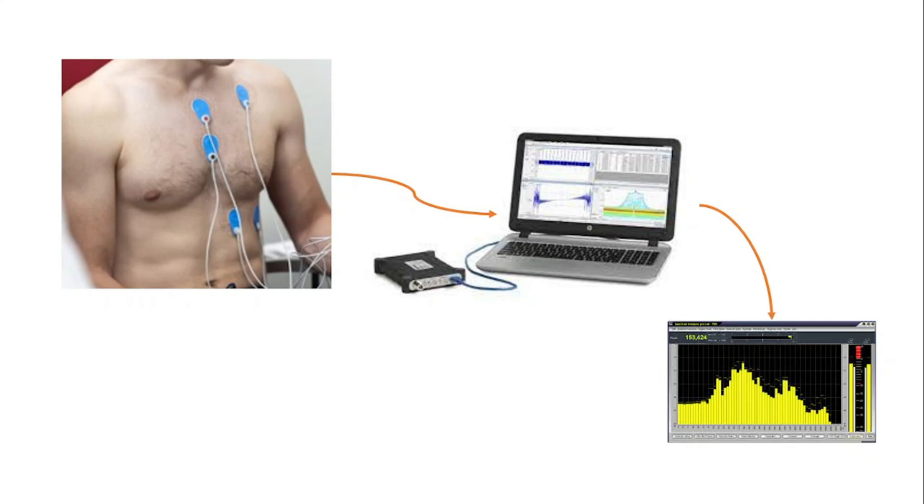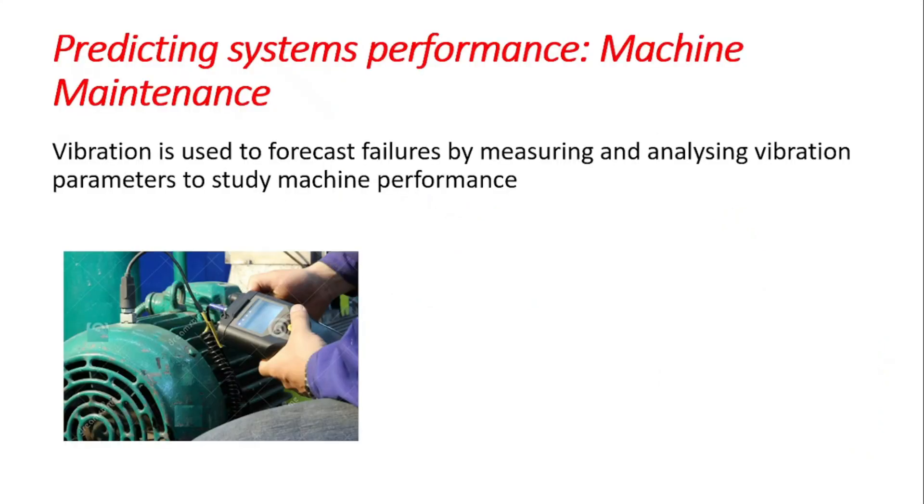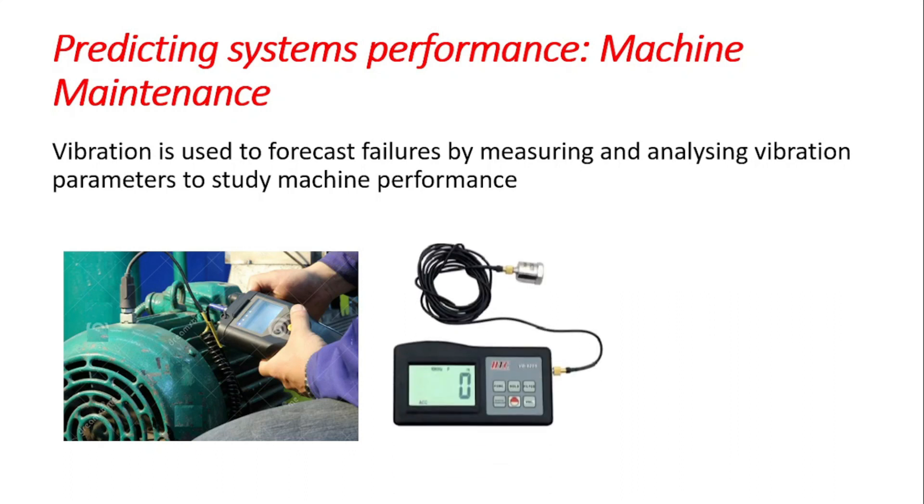So vibration can be used to predict machine performance. As a matter of fact, it's known that vibration is used to forecast failure by measuring and analyzing vibration parameters to study machine performance. And this measurement is usually carried out using what you call a vibrometer, which in turn is connected to a computer.